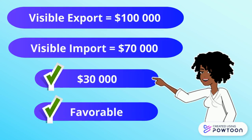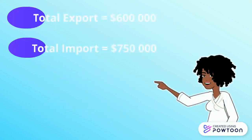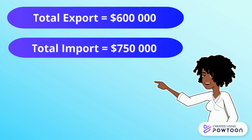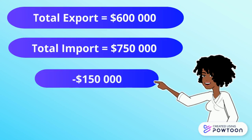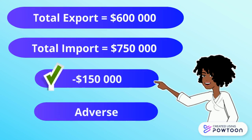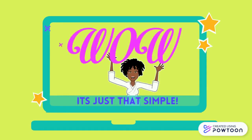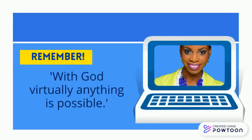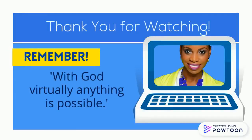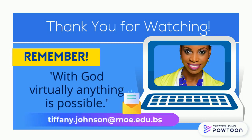Now let's take a look at the balance of payments. If our total exports were $600,000 and our total imports were $750,000, then our balance of payments would be a $150,000 deficit, which means it's an adverse balance. Wow, look at that — it's just that simple. I want to thank you for watching, and remember, with God virtually anything is possible.